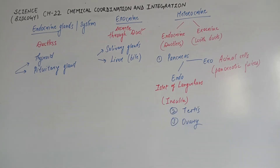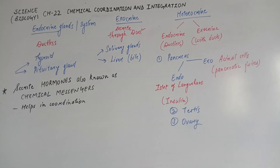Pancreas के अलावा, heterocrine के दूसरे examples हैं testis और ovaries। Testis का endocrine part testosterone hormone secret करता है, और seminiferous tubules exocrine part होता है testis का।